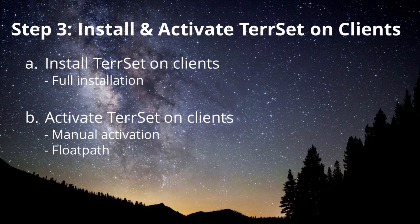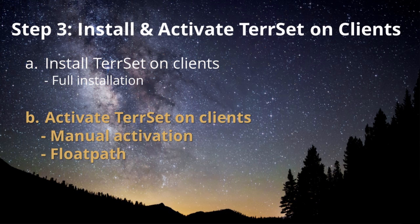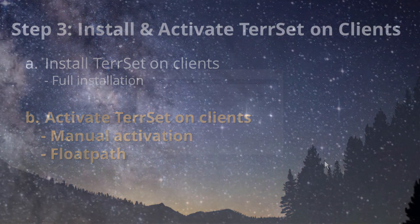The third and final step in setting up your Tearset multi-seat license is to install and activate Tearset on the client machines. Start by installing Tearset on the clients. Once the Tearset installation is complete on a client machine, there are two ways you can activate the client. You can either launch the license manager and manually activate the client, or you can use the float path to activate clients more quickly.